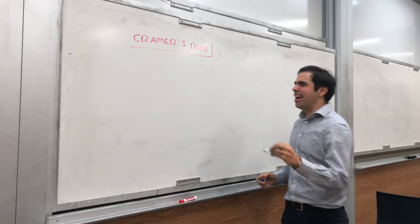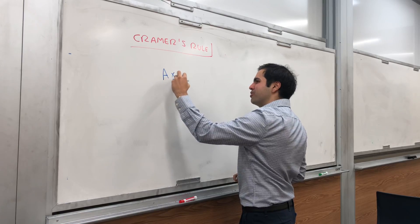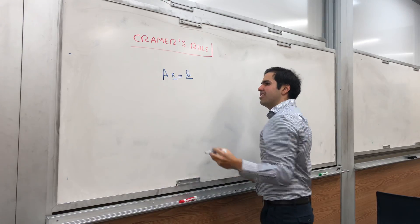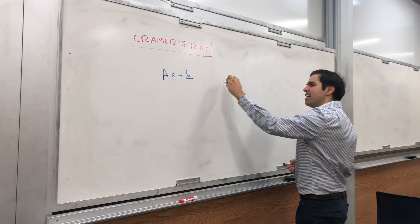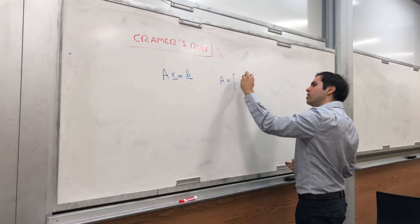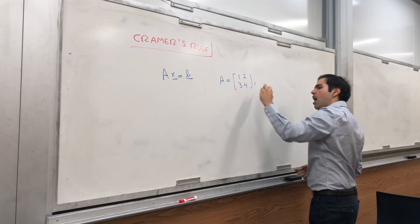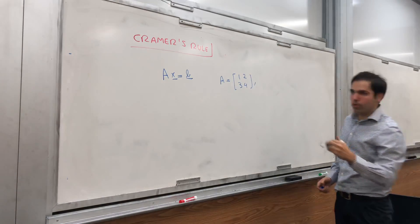It's called Cramer's rule, and it's a very neat way of solving ax equals b. So let's solve ax equals b where A is the matrix [1, 2; 3, 4] and b is [1; 0].